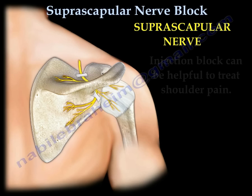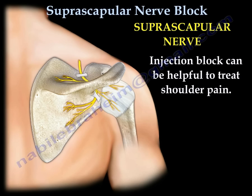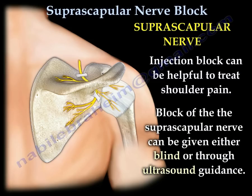The suprascapular nerve injection or block can be helpful to treat shoulder pain. This block can be given either blind or by utilizing the ultrasound technique.